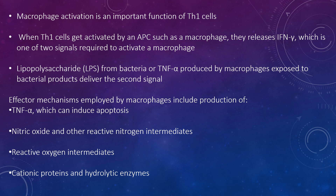Many of these macrophage functions can only be performed by activated macrophages. Macrophage activation can be defined as quantitative alterations to the expression of various gene products that enable the activated macrophage to perform functions that cannot be performed by the resting macrophage. Macrophage activation is an important function of Th1 cells. When Th1 cells are activated by an antigen-presenting cell such as a macrophage, they release interferon gamma, which is one of two signals required to activate a macrophage. Lipopolysaccharides from bacteria or TNF-alpha produced by macrophages exposed to bacterial products deliver the second signal. Effector mechanisms employed by macrophages include production of TNF-alpha, which can induce apoptosis, nitric oxide and other reactive intermediaries, reactive oxygen intermediates, cationic proteins, and hydrolytic enzymes.